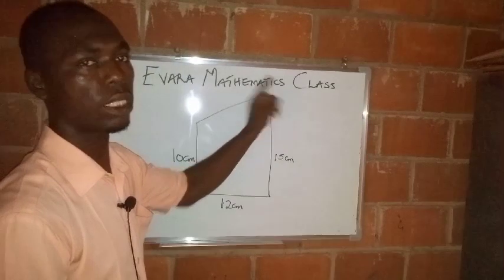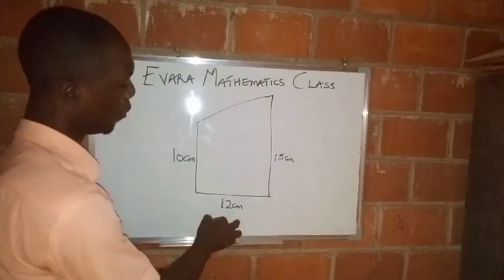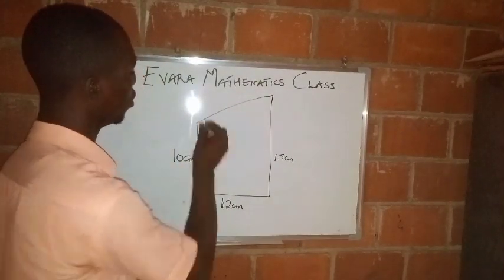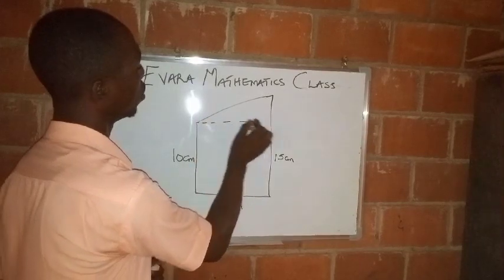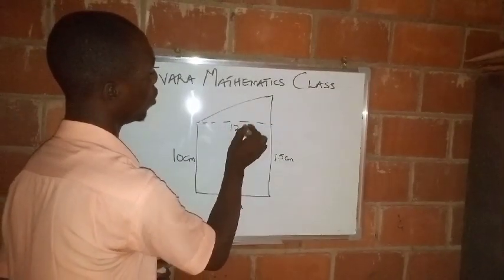Now, if here is 12 centimeters, it simply means that here would also be 12 centimeters.